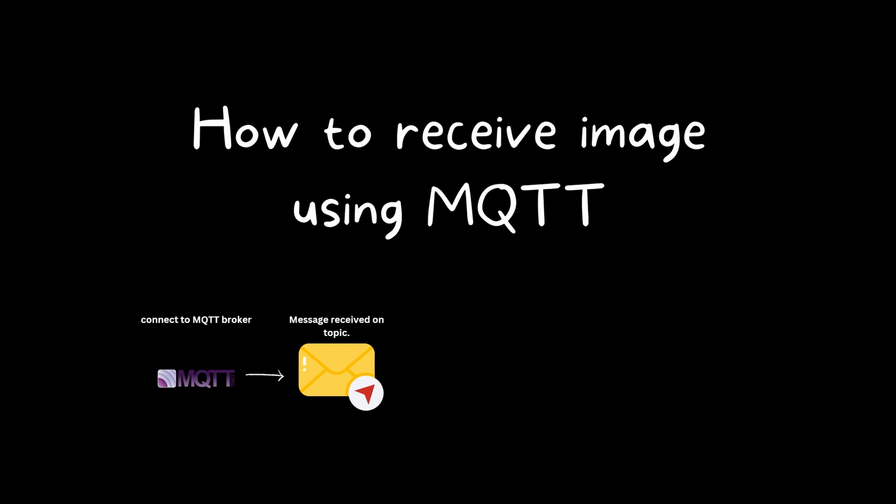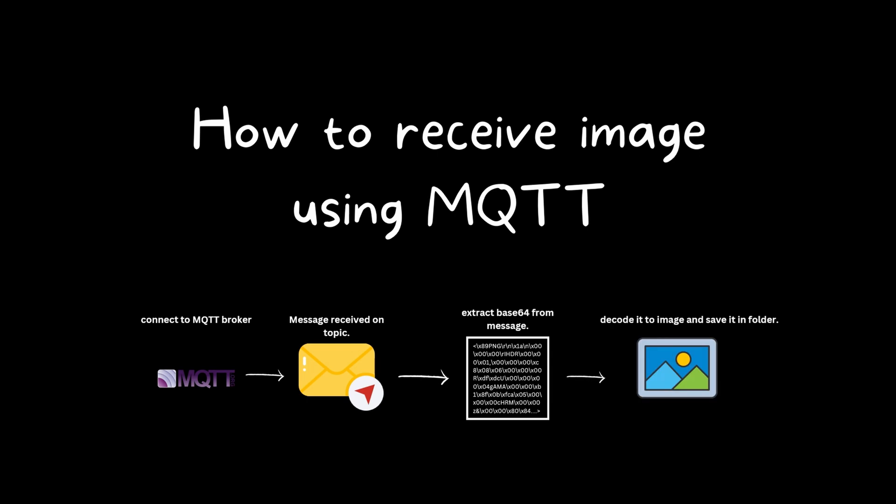Now let's switch roles and become the recipient. We will connect to the MQTT broker, subscribe to the topic where the image is sent, and eagerly await its arrival. Once the messages arrive, we will extract the Base64 code, decode it, and the image will be revealed.